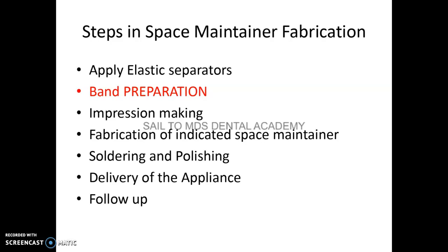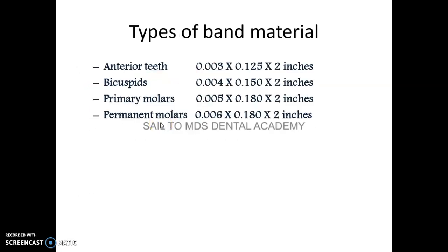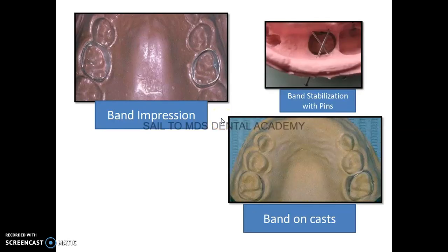The steps in space maintainer fabrication are: apply elastic separators, then band preparation, impression making, fabricate the indicated space maintainer, soldering and polishing, delivery of the appliance, and follow-up. For band material thickness: anterior teeth use 0.003 or 0.004 inches, primary molars use 0.005 inches, and permanent molars use 0.006 inches.